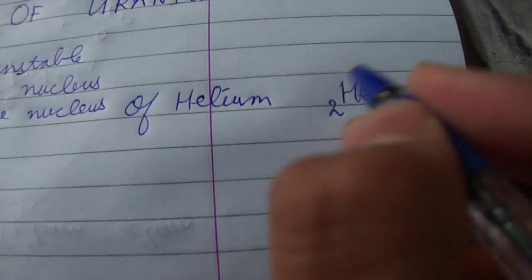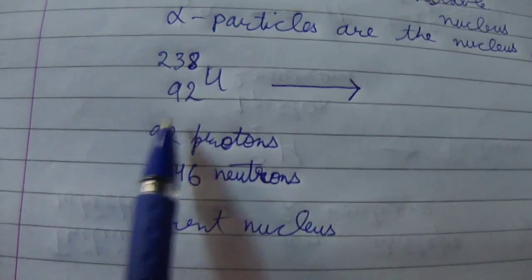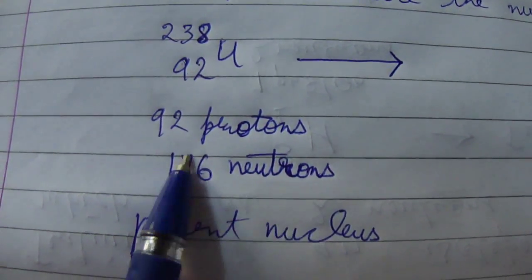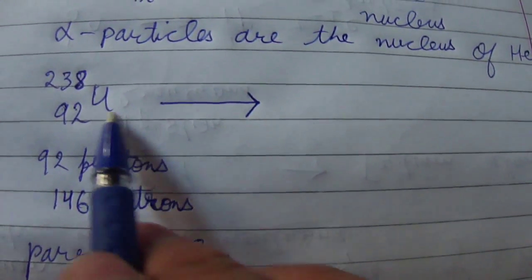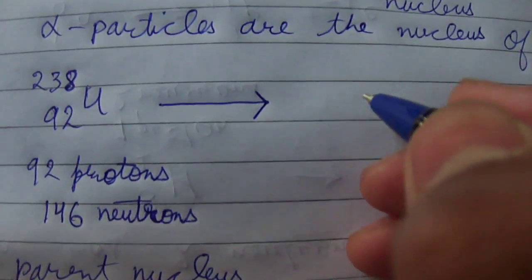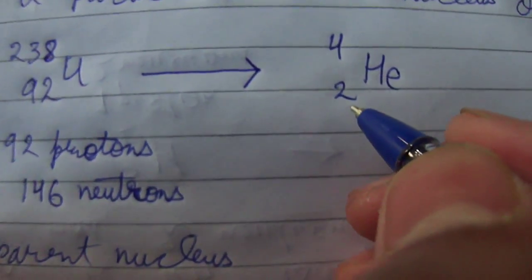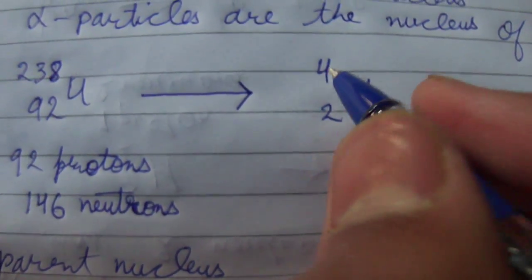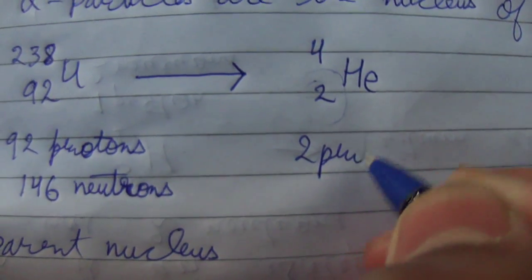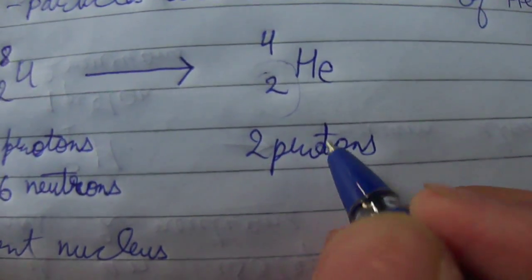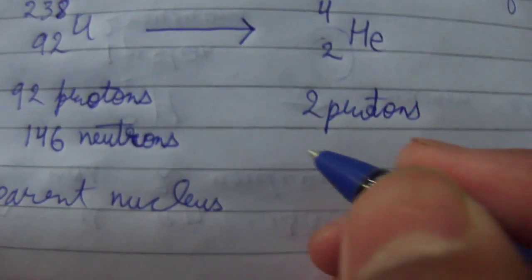Helium has two protons, its atomic number is 2, and its atomic mass is 4. In alpha emission, one alpha particle is displaced from the uranium nucleus — that is helium with 2 protons and atomic mass 4. Since atomic mass equals protons plus neutrons, and atomic mass is 4 with 2 protons, there are 4 minus 2 equals 2 neutrons.